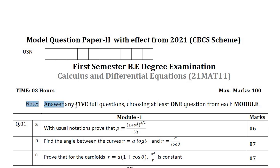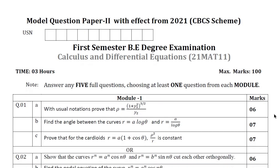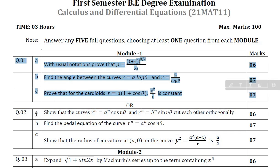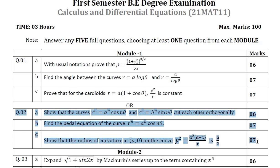The note says answer any 5 full questions choosing at least one question from each module. From each module they are going to provide 2 questions, so question number 1 and question number 2. This is the internal choice. You should answer either question number 1 full, means 1ABC, or you should answer question number 2ABC. Each module carries 20 marks distributed with 20 marks. You should answer either of these two questions as one full question.